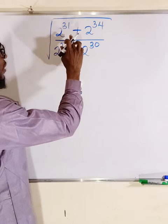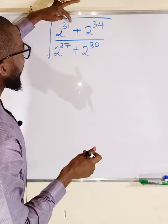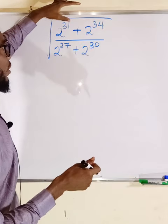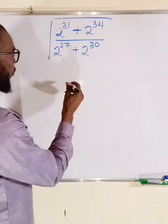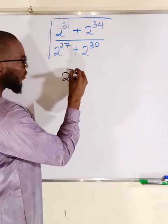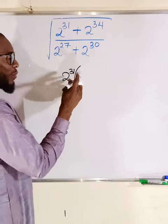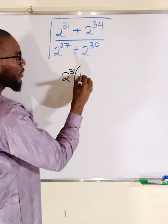I think the best way to factorize this is to bring the number with the least exponent. We have 31 and 34. 31 is smaller than 34. So we are going to bring 2 to the power of 31 outside. Then inside already it is gone. You take this, you divide by this. This will give us 1 plus.